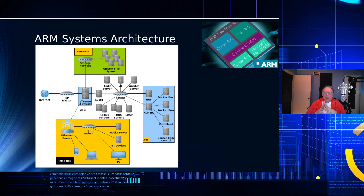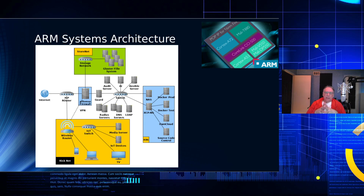An audit server just audits the logs. The AI server, as I mentioned, does a number of processes, and one of them is to monitor inbound emails. I have an Ansible server — when you have this many boxes, it's really a pain to go out and update them all. So the Ansible server not only does the updates, it does the initial installs, the security configuration on new machines, and it also does backups. I also run some ad hoc utilities if I need them, for instance to install packages on certain boxes and not others.